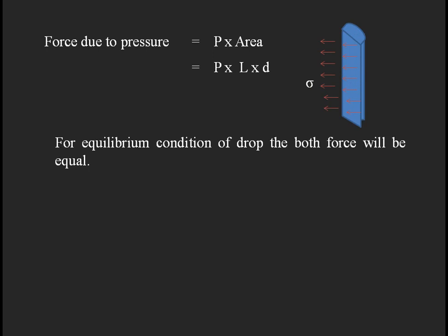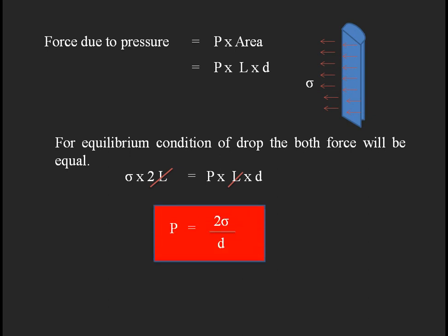For the equilibrium condition: σ × 2l = p × l × d. Cancelling l from both sides, we get p = 2σ/d, which is the equation for the pressure acting inside a liquid jet of length l and diameter d. By knowing σ and the diameter of the jet, we can find the pressure inside it.